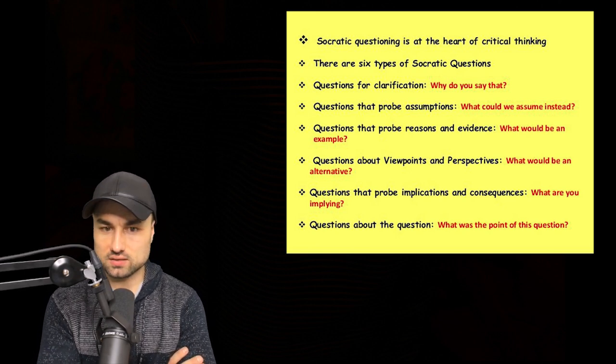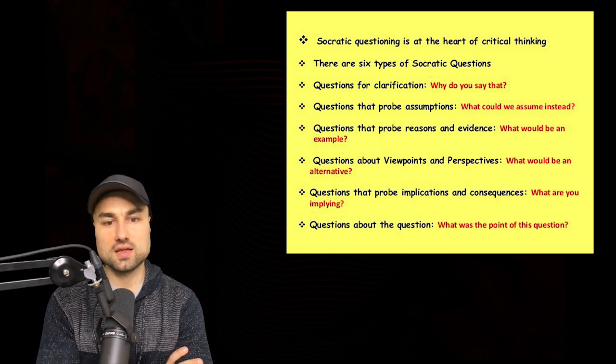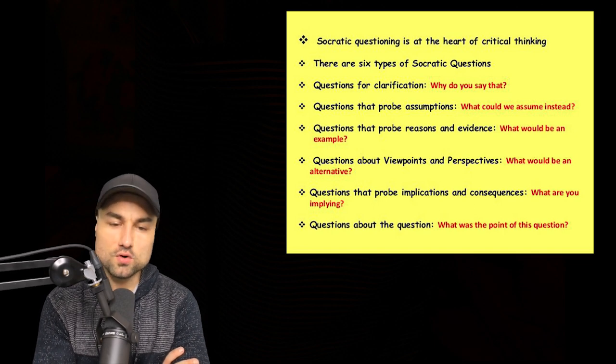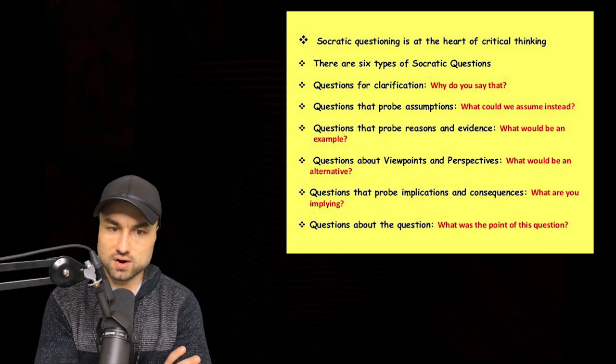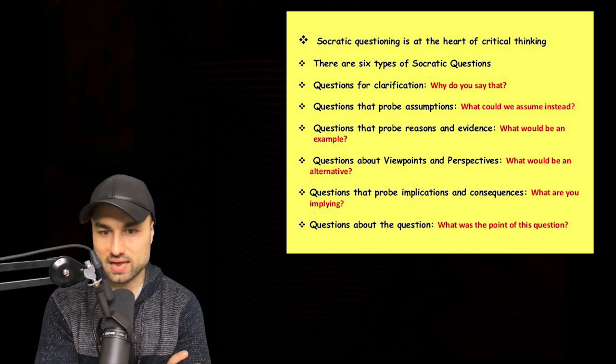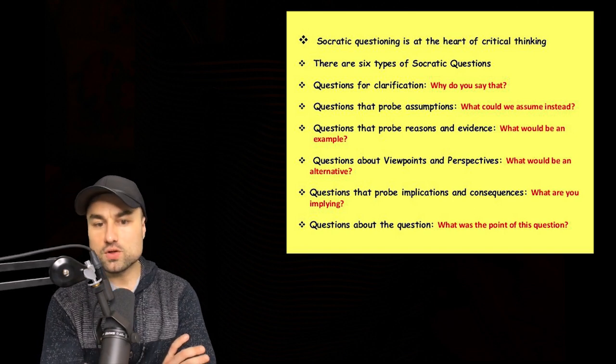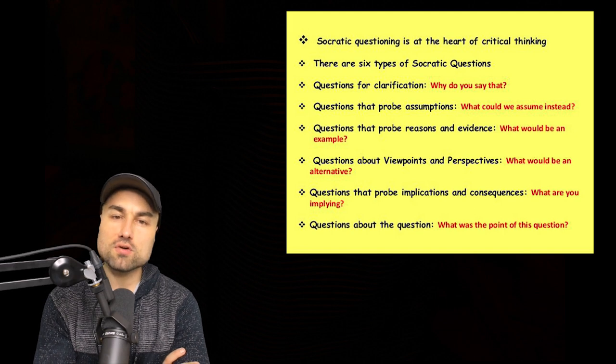And when we let other people tell us what's possible or what the best way of doing something is, we outsource our thinking to someone else. The real power of first principle thinking is moving away from incremental improvement and into possibility. Letting others think for us means we are using their analogies, their conventions, and their possibilities. It means we've inherited a world that conforms to what they think. This is incremental thinking.